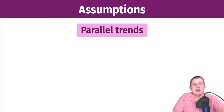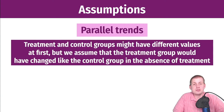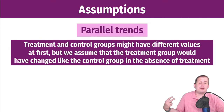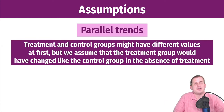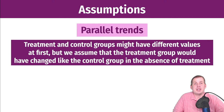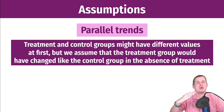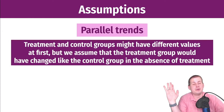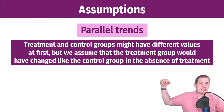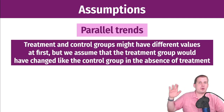Mathematically and graphically, there's a specific assumption you have to make called parallel trends. This is the assumption that the treatment and control groups, even if they have different starting values for whatever outcome you're measuring, are both going to move in the same direction. Going back to New Jersey and Pennsylvania — because they're very similar states right next to each other, you'd assume that in the absence of raising the minimum wage in New Jersey, they probably would have followed the same path as Pennsylvania. But they went up a little more because of the policy change. That's why you can't compare New Jersey with Montana — Montana has its own trends in economics, wages, and fast food hiring practices completely different from New Jersey.